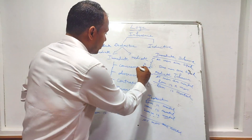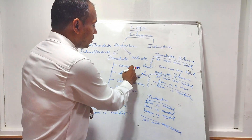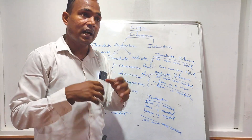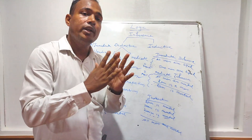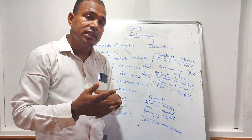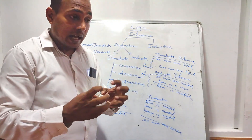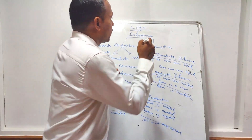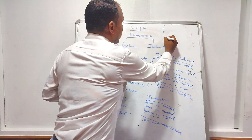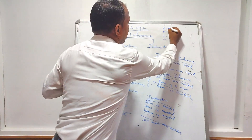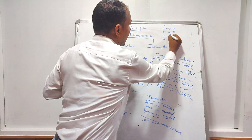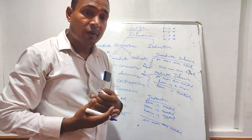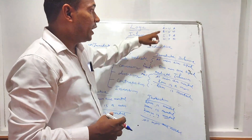Immediate inference is further divided into: conversion, obversion, contraversion, and inversion. According to quality, propositions are affirmative or negative. According to quantity, propositions are universal or particular. Based on this classification, there are four types of propositions: A (universal affirmative), E (universal negative), I (particular affirmative), and O (particular negative).